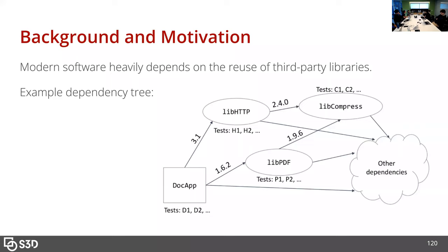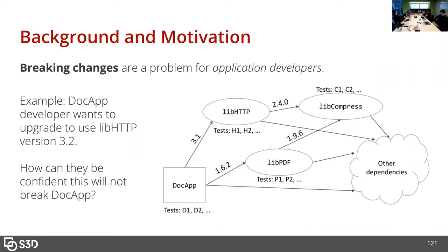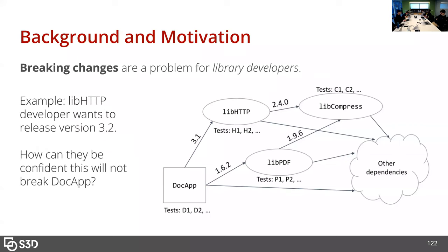All these libraries and applications may have associated tests. One challenge is that breaking changes are a problem for application developers. If a doc app developer wants to upgrade their version of HTTP to 3.2, how are they confident it won't break their application? Another side is problems for library developers — if lib HTTP wants to release 3.0 publicly, how are they confident they won't break downstream clients? Library developers are often pressured to release new features, so they're trading off the risk of introducing breaking changes against trying to introduce new features.